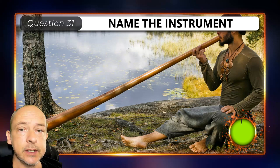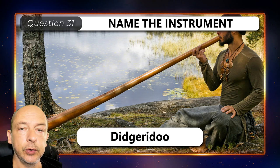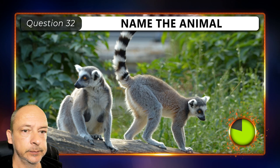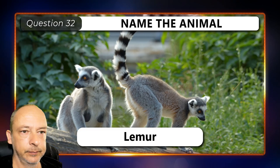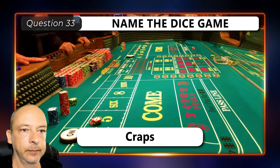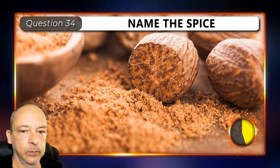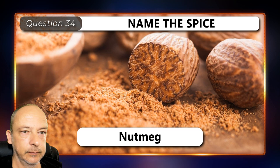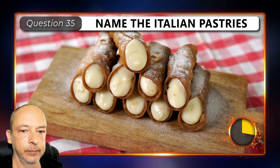Can you name this instrument? It's a didgeridoo. What type of animal is this? It's a lemur. What dice game is this? Craps. What type of spice is this? Nutmeg. Can you name these Italian pastries? Cannoli.